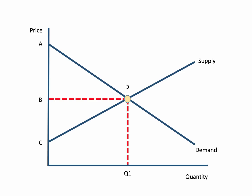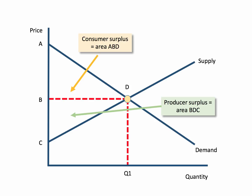Let's take an example. Consider a market for a product where the initial equilibrium is at price B and quantity Q1 — the equilibrium where supply meets demand at point D. When that equilibrium is established, consumer surplus — the difference between what consumers are willing and able to pay and what they actually do have to pay — is the area ABD. Producer surplus — the difference between what the producer is willing and able to supply the product for and the price they actually get — is shown by area CBD. Adding those two areas together gives us ACD, otherwise known as community surplus or total economic welfare.